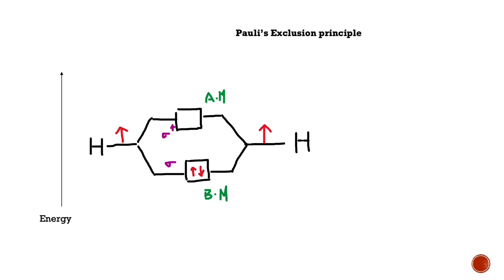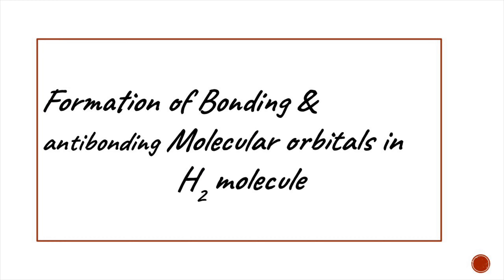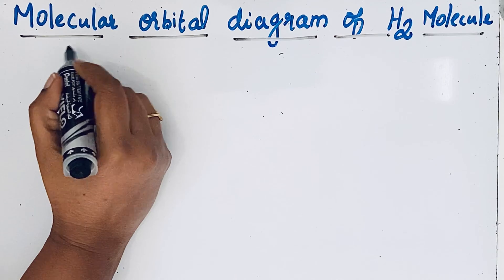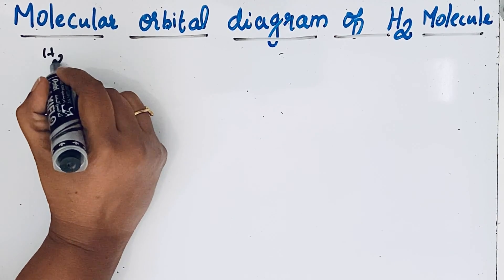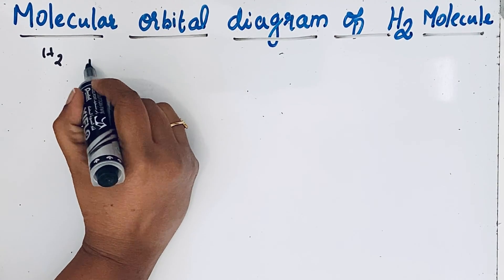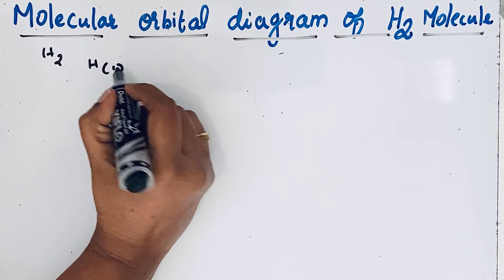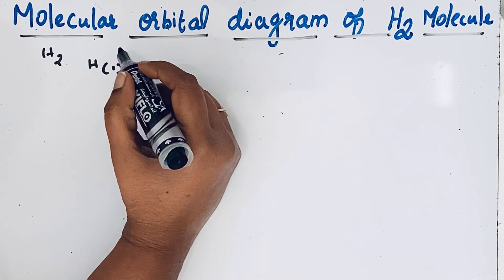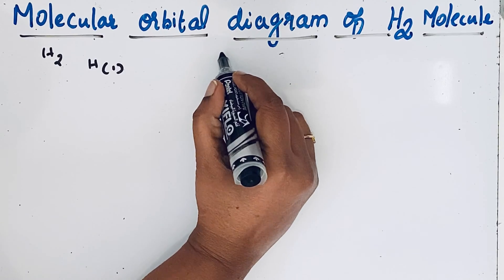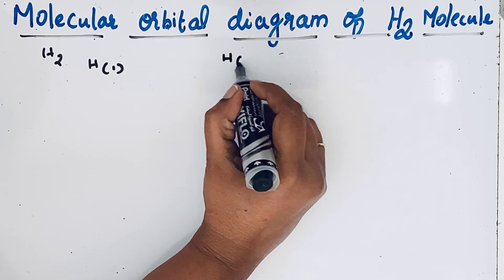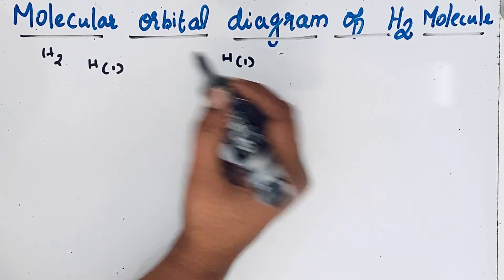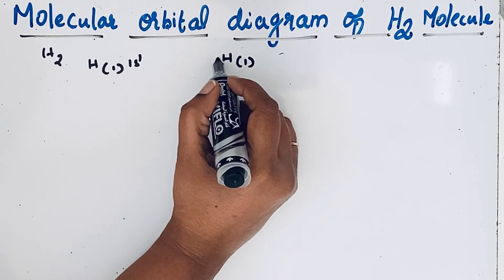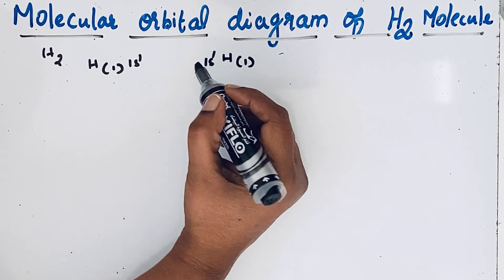We are here to write the molecular orbital diagram for hydrogen molecule. Hydrogen molecule is formed by the combination of two hydrogen atoms, each with atomic number one. The electronic configuration of each hydrogen atom is 1s¹.